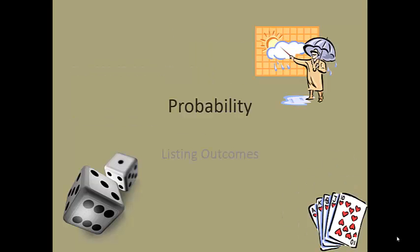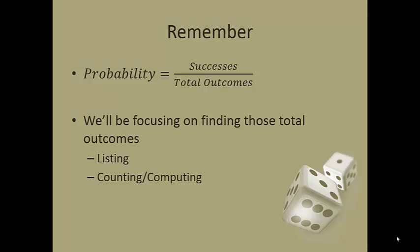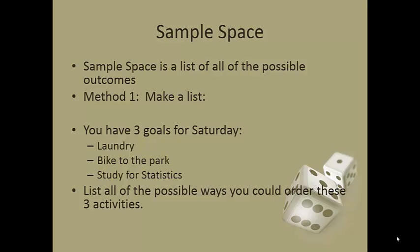So the next thing we need to talk about is listing outcomes. This is really important when I need to get that number of total successes or more commonly that number of total outcomes. So first of all going back to our sample space, this is our list of all things that could happen. There's a couple different ways you can do this.